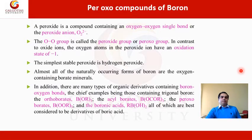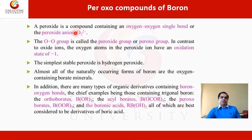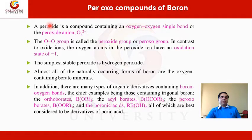Now let us discuss about peroxyl compounds of boron. The first question is: what are peroxyl compounds? A peroxyl compound is mainly a compound which contains an oxygen-oxygen single bond. We can say it is having a peroxide anion, that is O2 with 2 minus charge. These are basically referred to as peroxyl compounds. We have different compounds like Na2O2 (sodium peroxide), K2O2 (potassium peroxide), and H2O2 (hydrogen peroxide). These are peroxide compounds which have this oxygen-oxygen single bond, having peroxide anions in their structural formula.